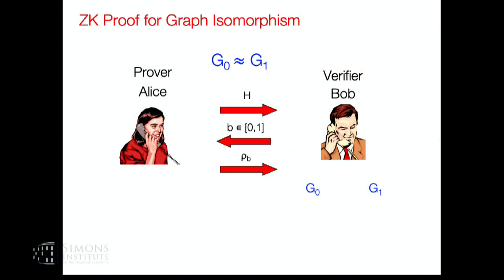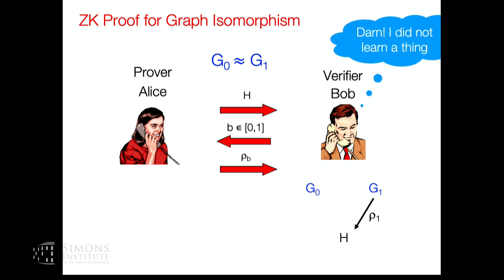For zero-knowledge: in an interaction, the verifier either learns an isomorphism between G0 and some random graph H, or between G1 and a random graph H. This doesn't reveal any explicit connection between G0 and G1 itself. This can be formally argued.